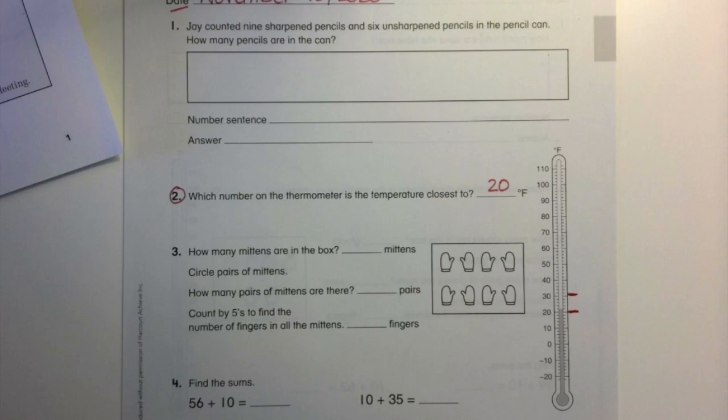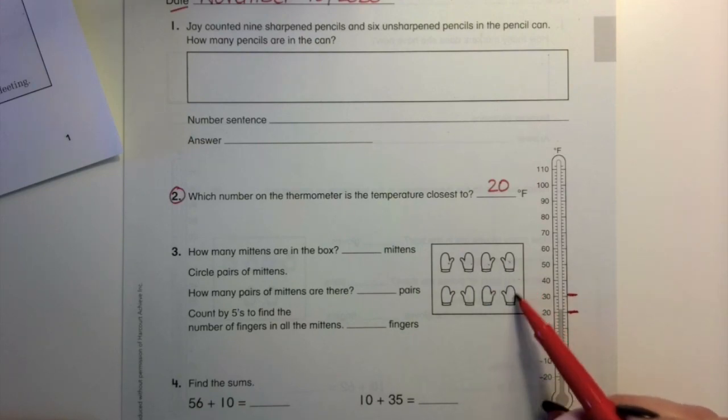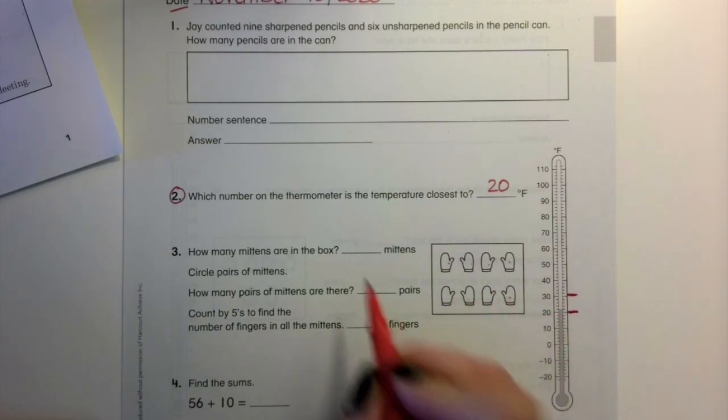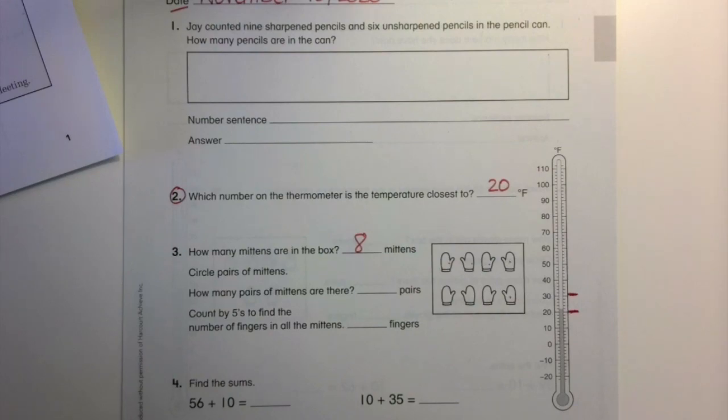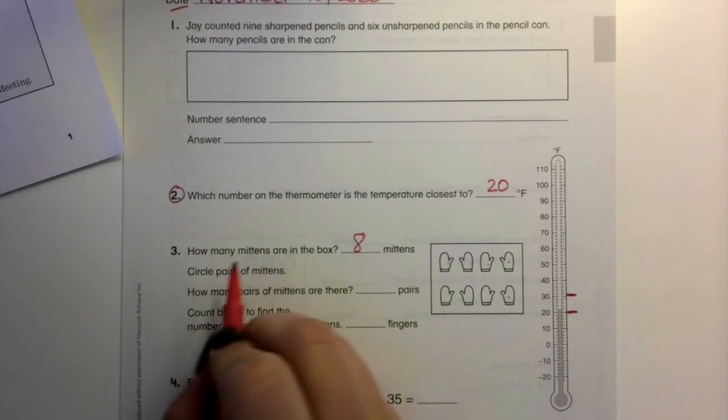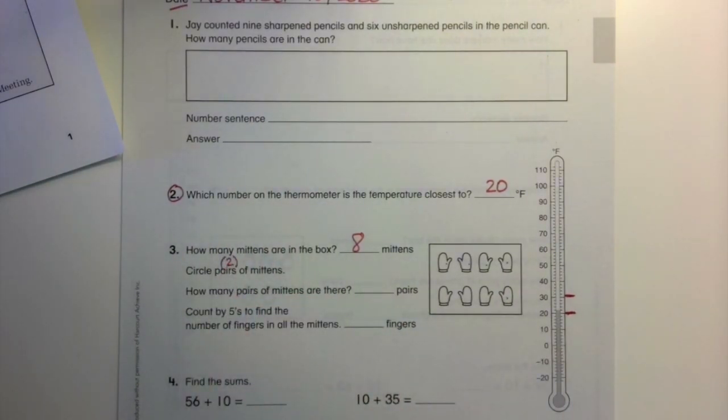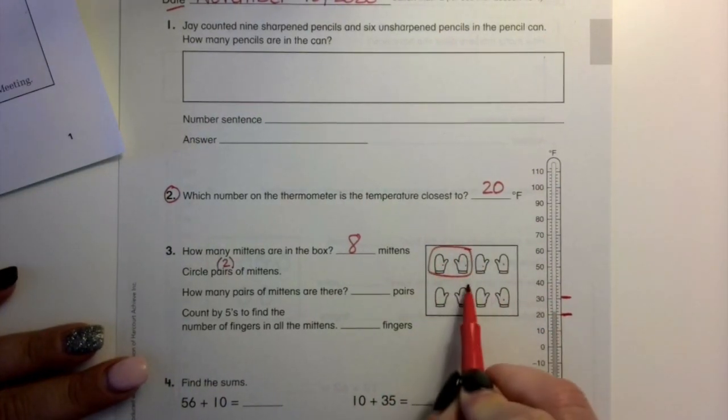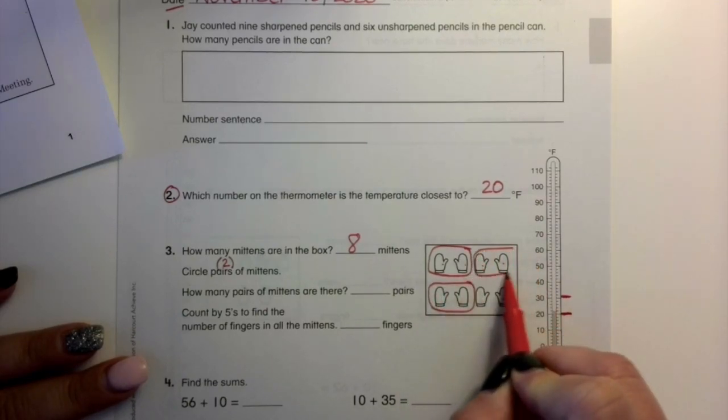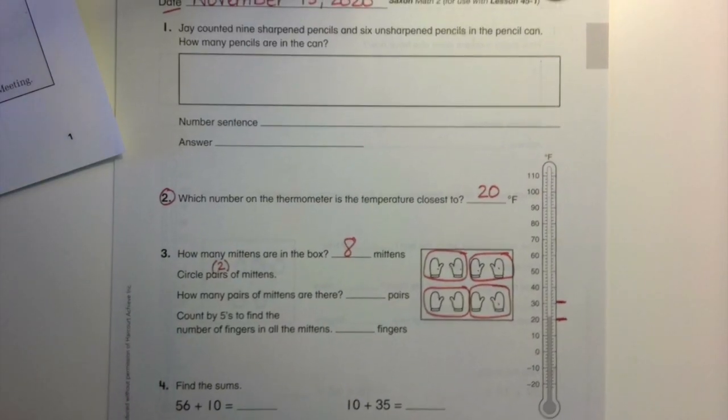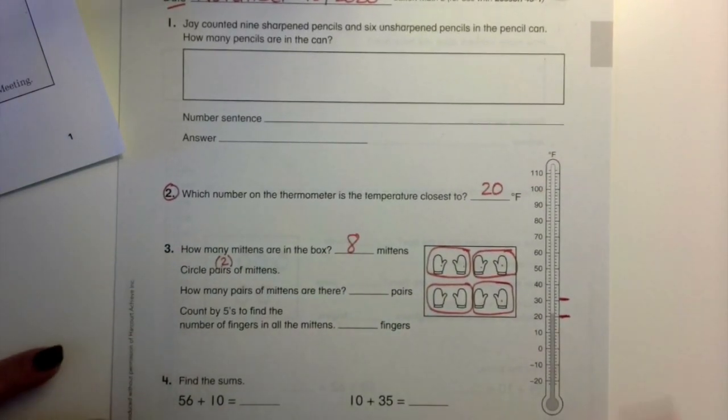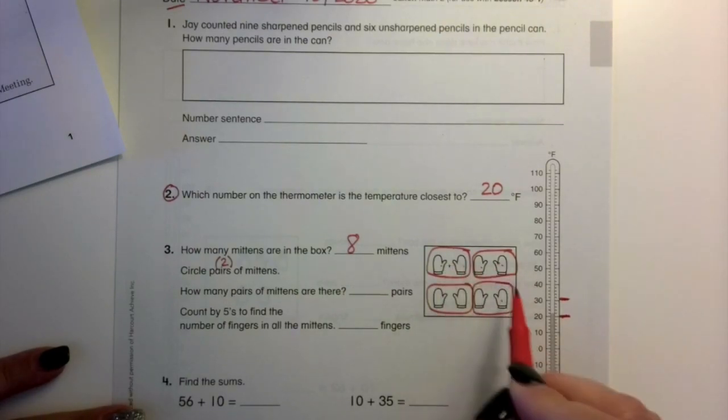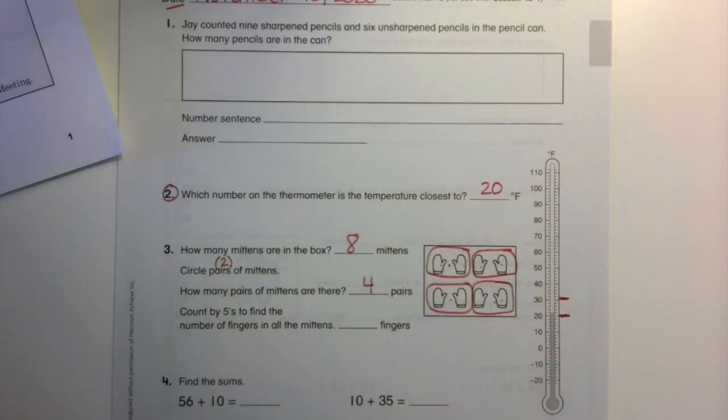Then I also would like to do number three. It says how many mittens are in the box. So you need to count the total amount of mittens. One, two, three, four, five, six, seven, eight. Then it says to circle the pairs of mittens. A pair is how many mittens? A pair is two. So I have to circle the pairs. I'm going to circle the left and the right together. Okay. So how many pairs of mittens are there? How many circles do we have to make? One, two, three, four.